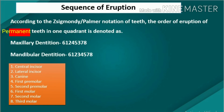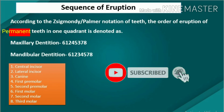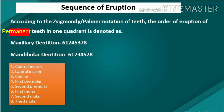Sequence of eruption: according to the Zsigmondy-Palmer notation of teeth, the order of eruption of permanent teeth in one quadrant is as follows — sequence in maxillary teeth: 6-1-2-4-5-3-7-8; sequence in mandibular teeth: 6-1-2-3-4-5-7-8. Where 1 is central incisor, 2 lateral incisor, 3 canine, 4 first premolar, 5 second premolar, 6 first molar, 7 second molar, 8 third molar.